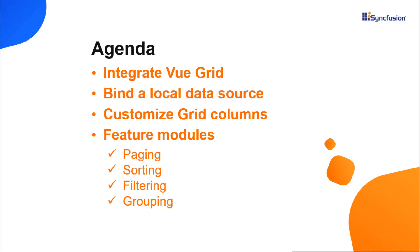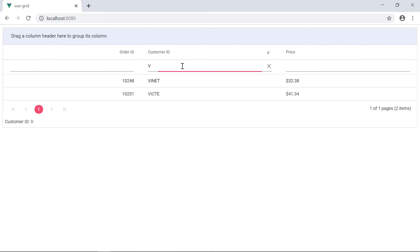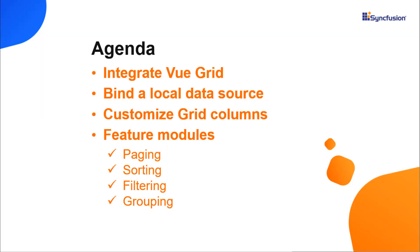Now let me make a quick summary of what we have seen so far. I have shown you how to add a Syncfusion grid to a Vue application. We have also seen how to bind local JSON data to the grid and how to enable few of its features like paging, sorting, filtering and grouping. You can check our documentation link provided in the description section below to learn more about how to get started with our Syncfusion Vue grid. You can also post your comments below if you need additional information about any grid topics. Thank you for watching. There are many more features in the Syncfusion Vue grid and my upcoming videos will cover those features. Please like and subscribe to our channel to watch more videos. Thank you.